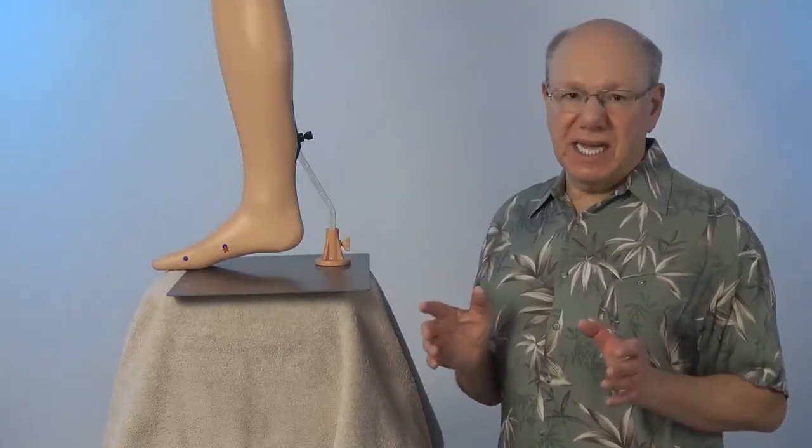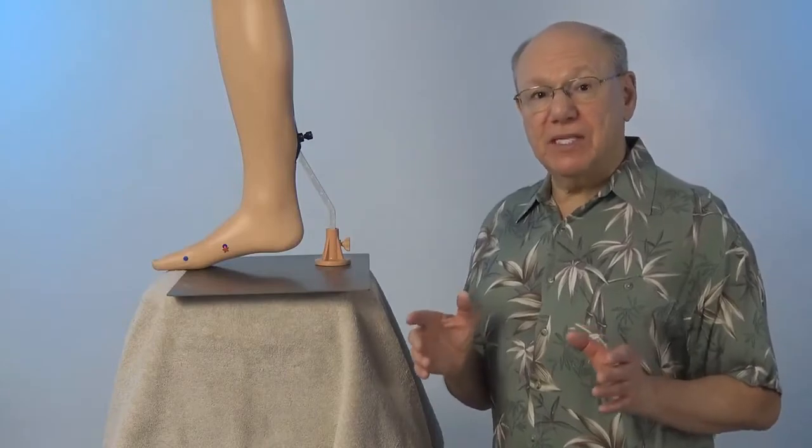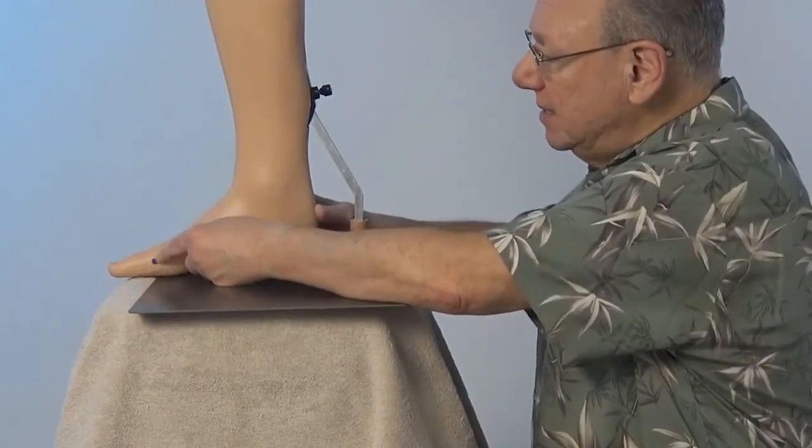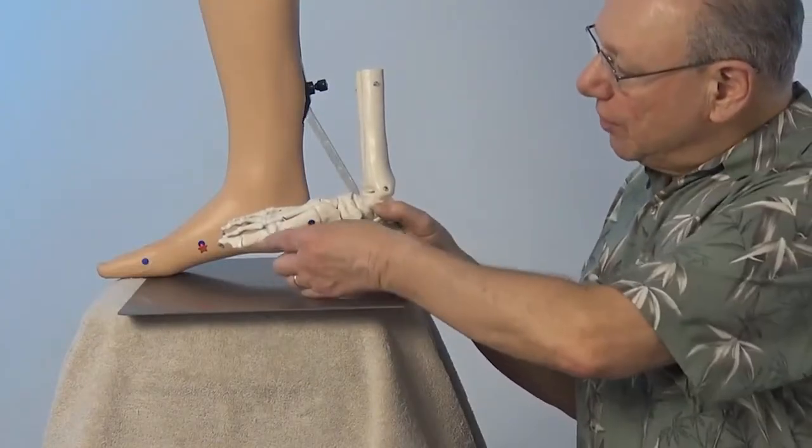Spleen 4 is located on the inside of your foot. To locate Spleen 4 on your right foot, find the base of your great toe right here. And on a skeleton, it's right over here.